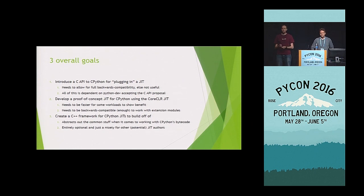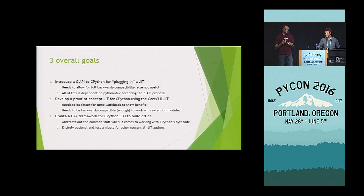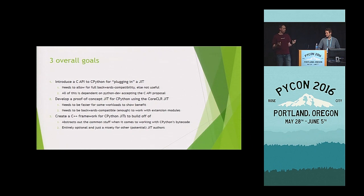The second goal was to develop an experimental proof of concept of a JIT that does use this API to also help drive its design. In our case, we used core CLR, which has been open sourced as part of the open sourcing of .NET Core. And while we're not married to it specifically — like we've talked about using Chakra, for instance — we think we've got it working, and working reasonably.